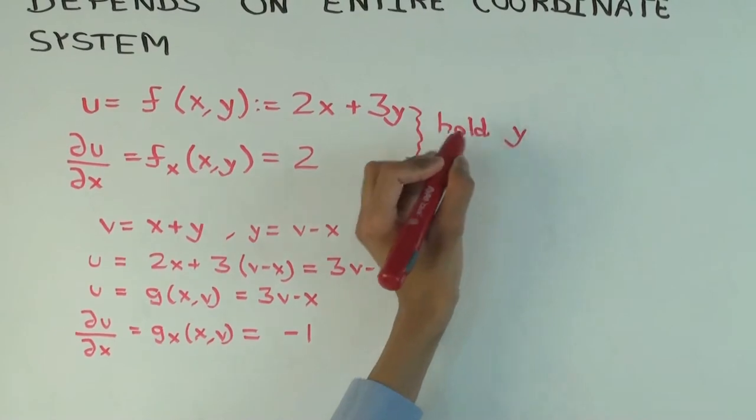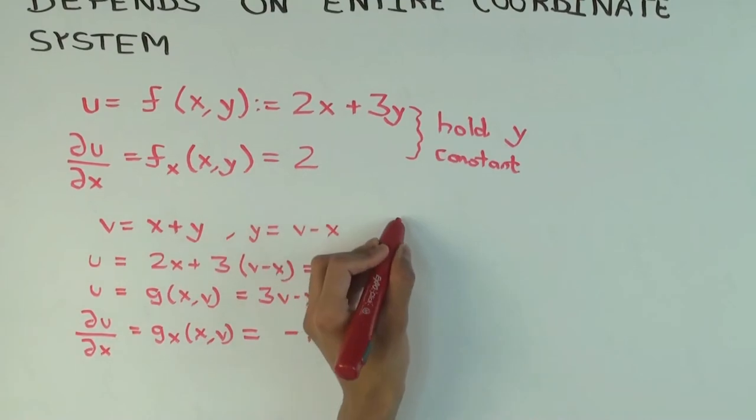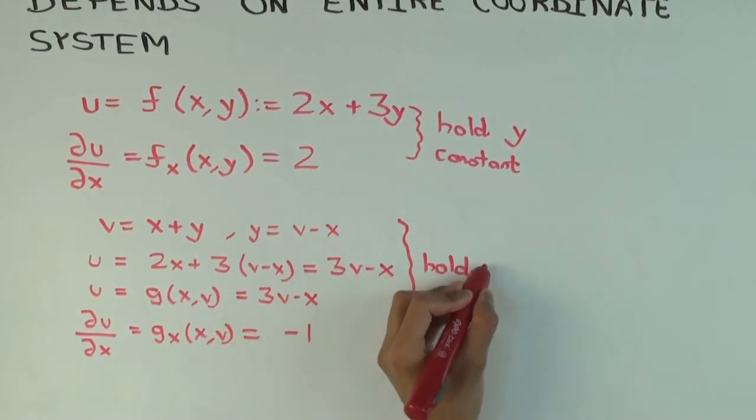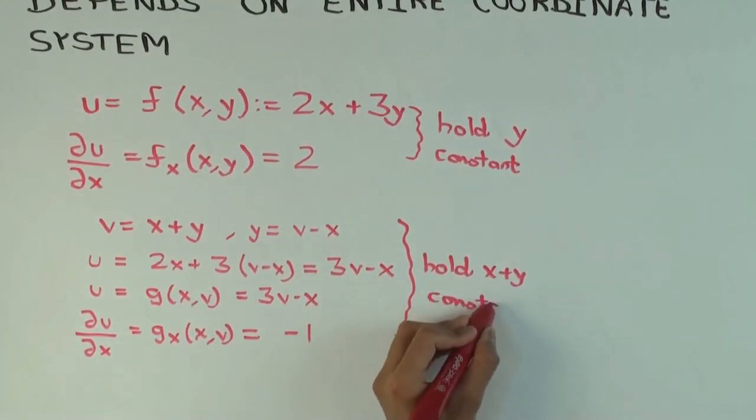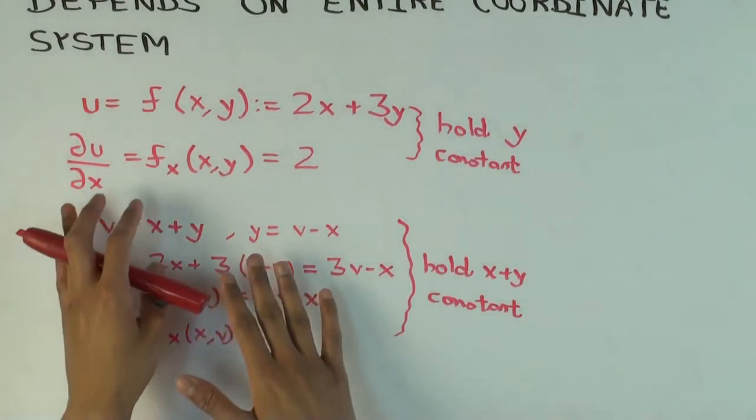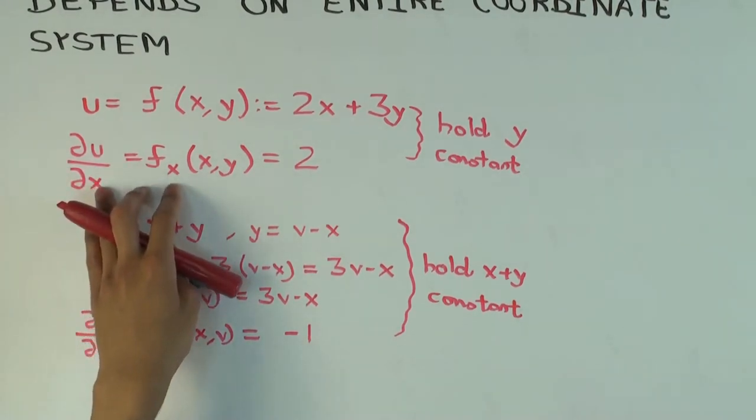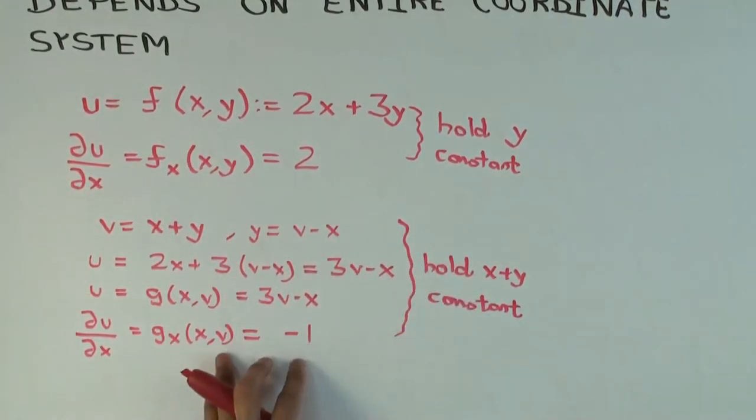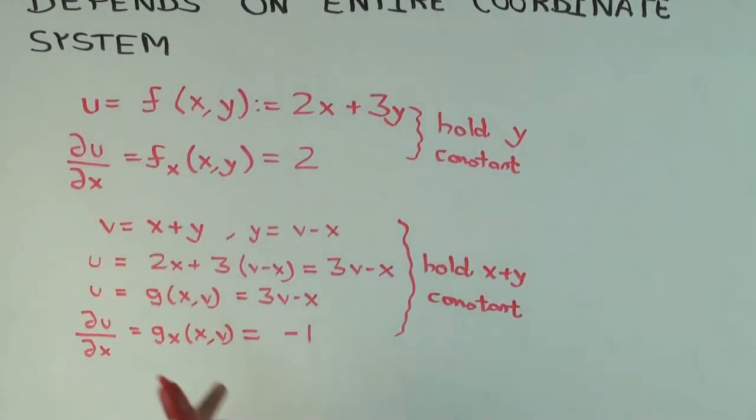Yeah, so this one, you are holding y constant. And this one, you are holding x plus y, which is v constant. So the value of the partial derivative doesn't just depend with respect to x, doesn't just depend on the fact that you're differentiating with respect to x. It also matters that you're holding y constant. Because if instead of y, you are holding x plus y constant, you would get a different number, right? You've got 2 in the original thing and you've got minus 1 here.